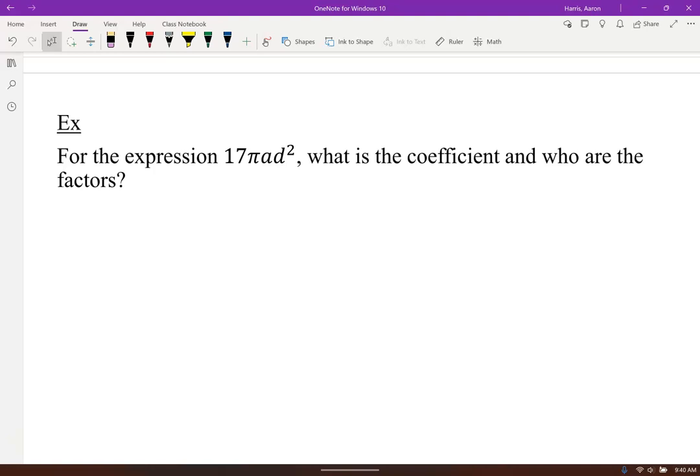All right, let's talk about this expression 17 pi a d squared. The coefficient is the number in front of the variable. In this case can you see the a and the d squared?